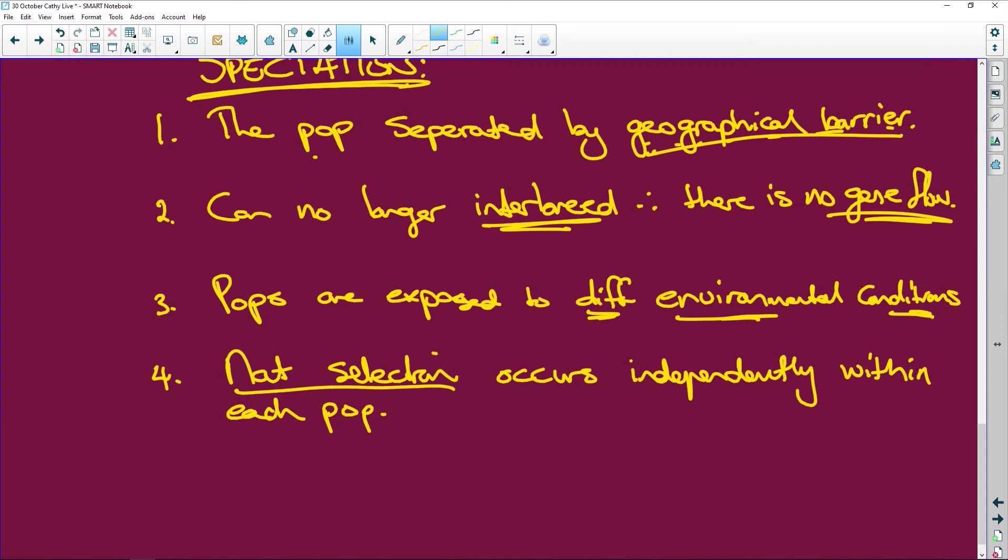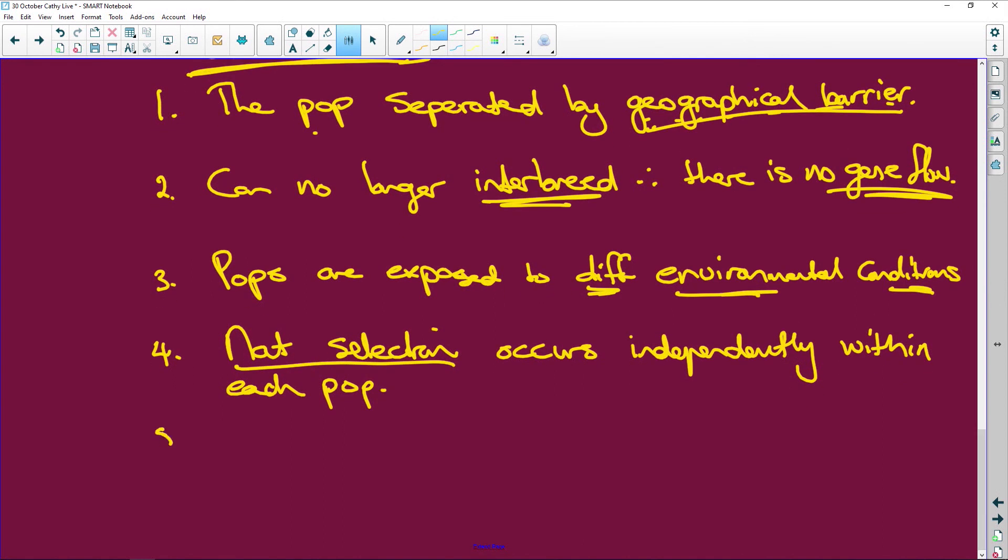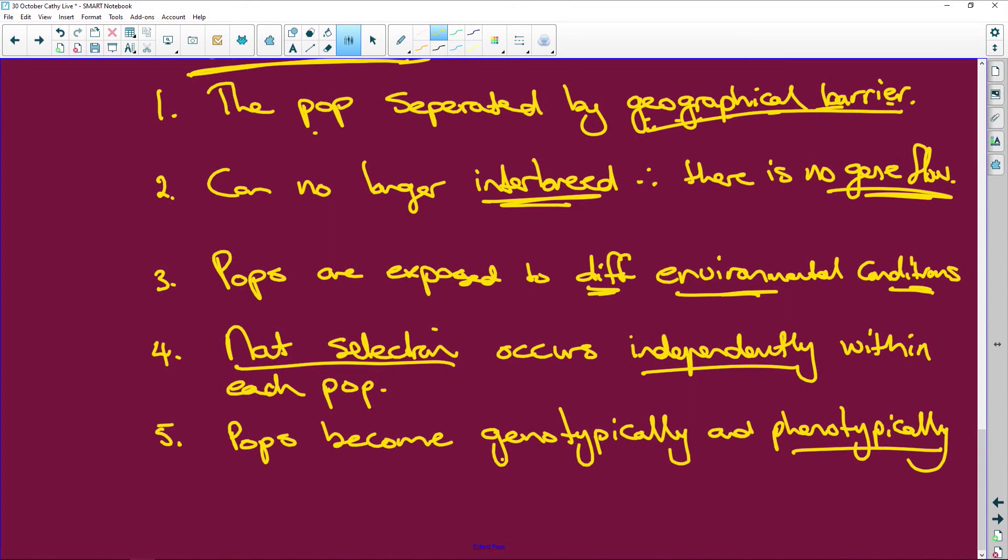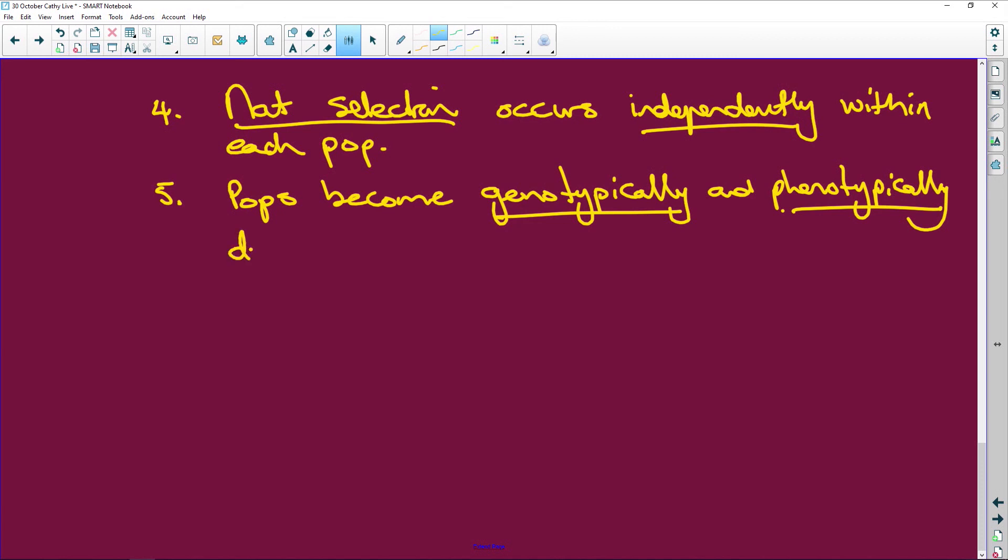We have natural selection. Number five: the pops, both populations, become genotypically and phenotypically, so the genes and the physical appearance, genotypically and phenotypically different over time. So natural selection occurs independently within each population. The populations become genotypically and phenotypically different over time.